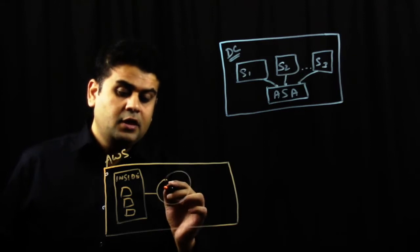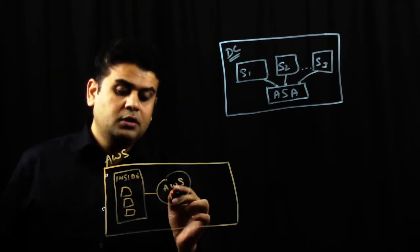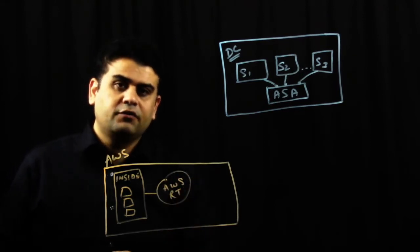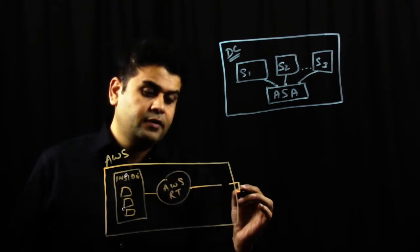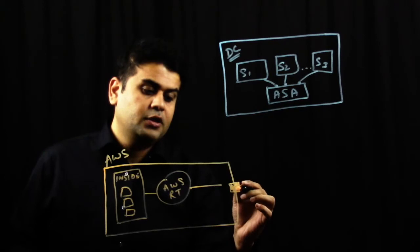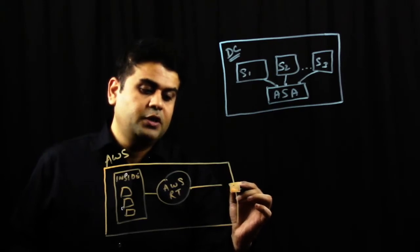I have AWS route table, which is a native route table of AWS. And at the edge, I have VPN connection, native AWS VPN connection.